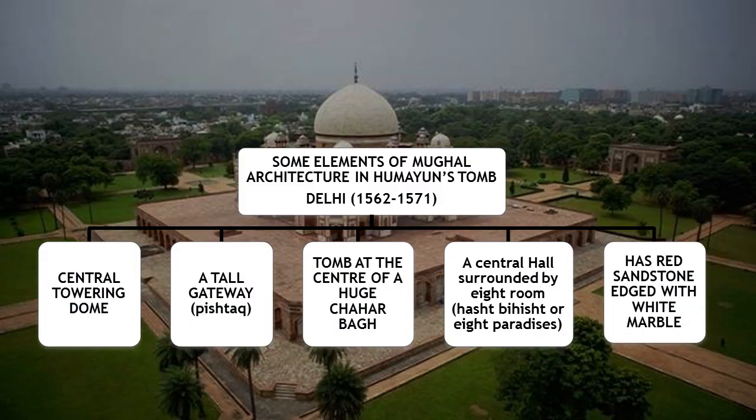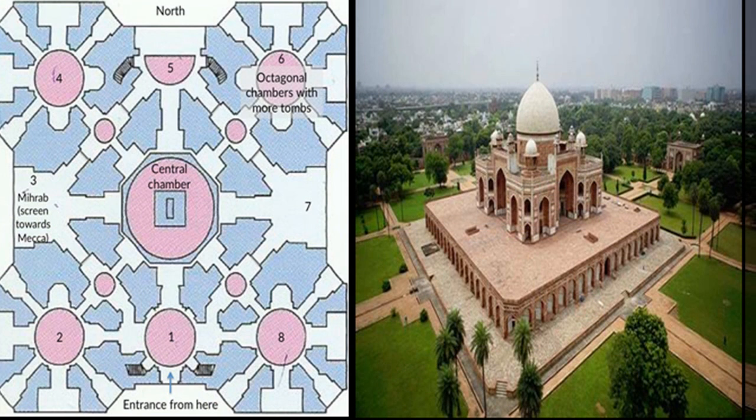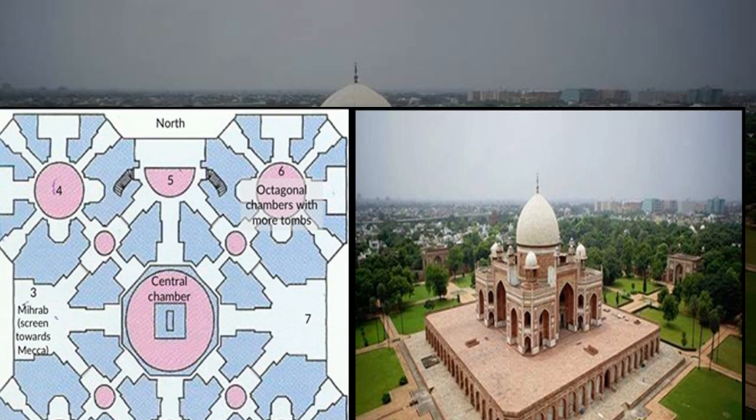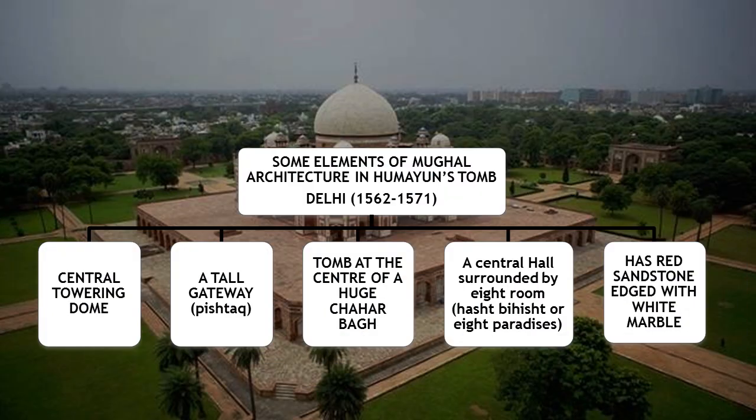Apart from this, the central hall of the main structure has eight rooms, also called hasht behisht, meaning eight paradises. Thank you so much — please do not forget to like and subscribe.